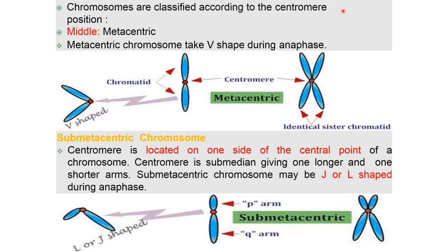Chromosomes are classified according to the position of the centromere. If the centromere is present at the middle, then it is called metacentric. Metacentric chromosomes take on a V shape during anaphase.